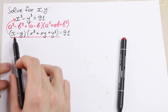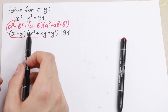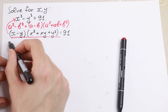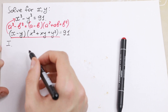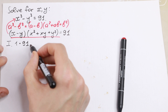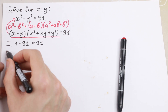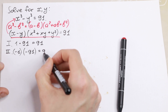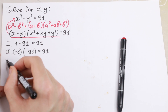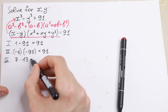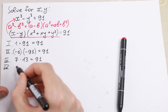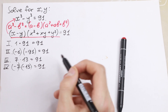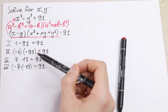Imagine that this is two numbers, and we have two parentheses. 91 is a good number because there are not many ways to express it. The first case: 1 times 91 equals 91. The second case: minus 1 times minus 91. The third case: 7 times 13 equals 91. And the fourth case: minus 7 times minus 13. So we express 91 in four ways.